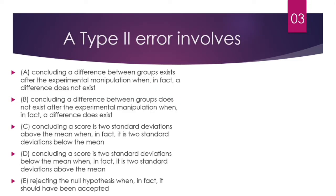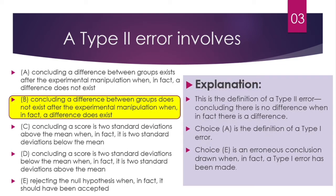Question number 3. A type 2 error involves. The answer is B. This is the definition of type 2 error — we conclude that there is no difference when in fact a difference does exist. Choice A is the definition of a type 1 error, and choice E is an erroneous conclusion drawn when a type 1 error has been made.